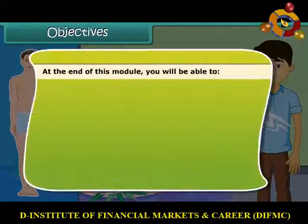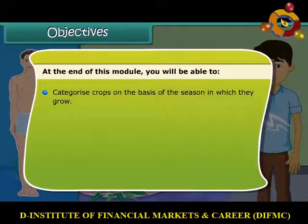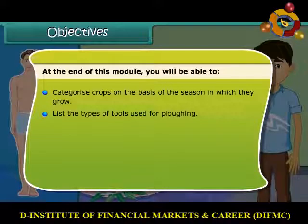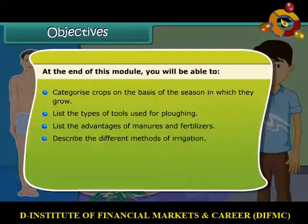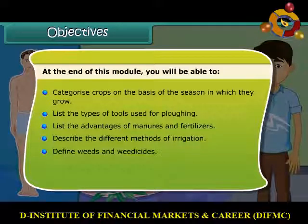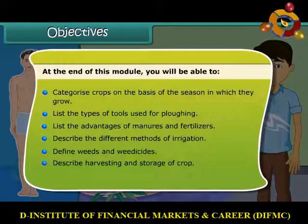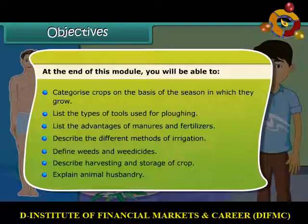At the end of this module, you will be able to: categorize crops on the basis of seasons in which they grow; list the types of tools used for plowing; list the advantages of manure and fertilizers; describe the different methods of irrigation; define weeds and weedy sites; describe harvesting and storage of crop; and explain animal husbandry.